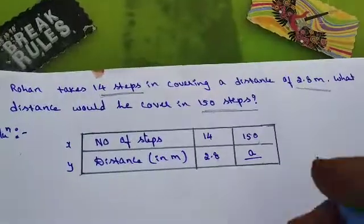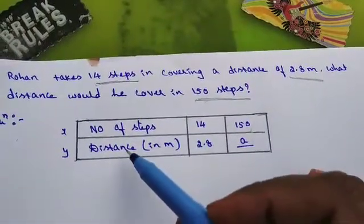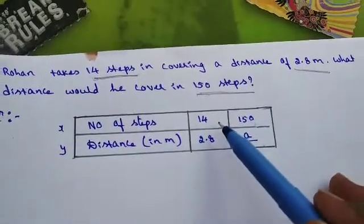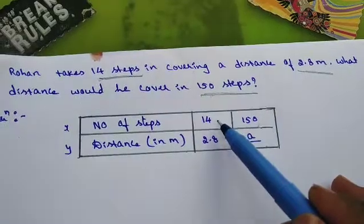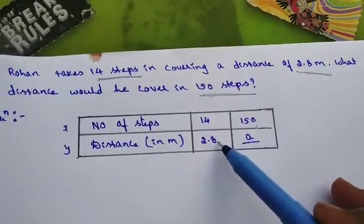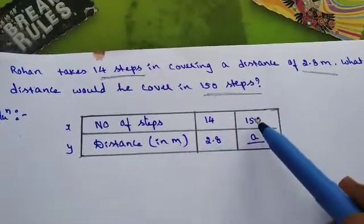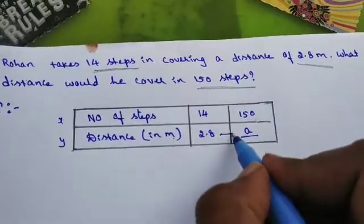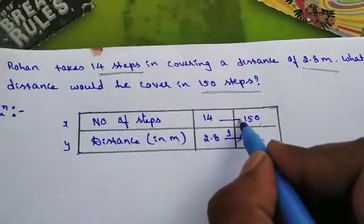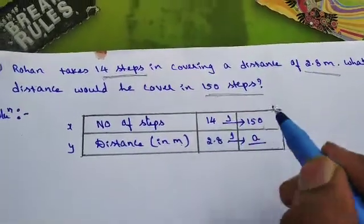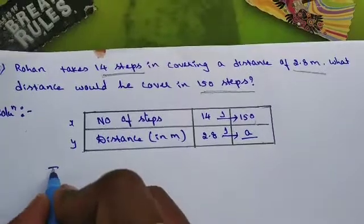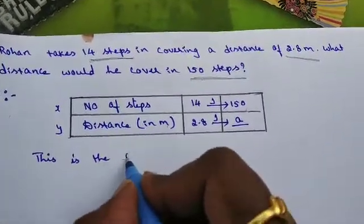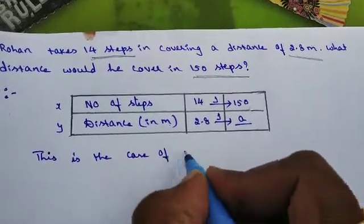So now by knowing the information we'll prepare the table. So the table is ready children. Number of steps and the distance. These are the two quantities, that is x and y. So if Rohan takes 14 steps then the distance covered by him is 2.8 in meters and 150 don't know. So from here to here it is of increasing and here the number of steps also increased. So this is the case of direct variation.